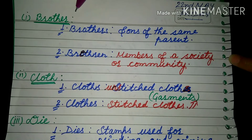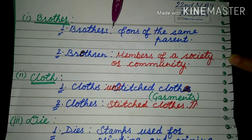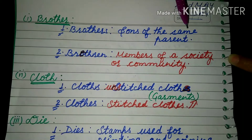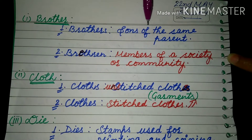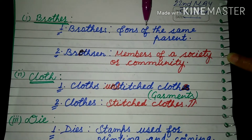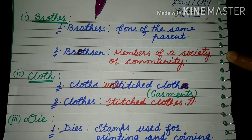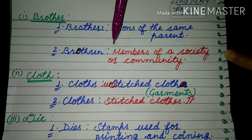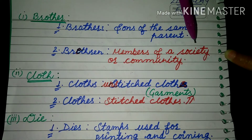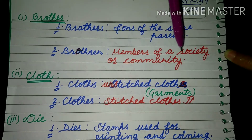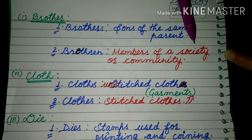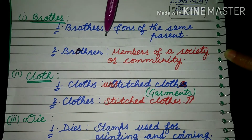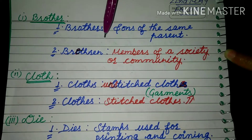Brother: the first plural is 'brothers', which means sons of the same parents. Another plural is 'brethren', which means members of a society or community — people who have their society or community, their plural is brethren.